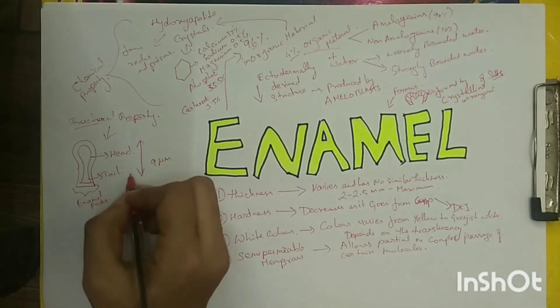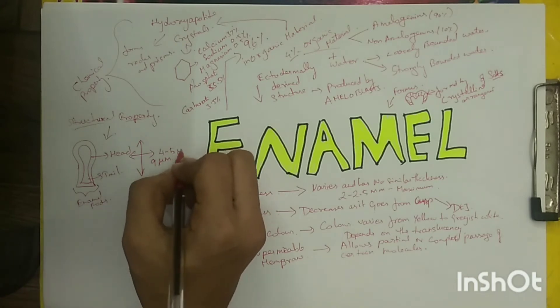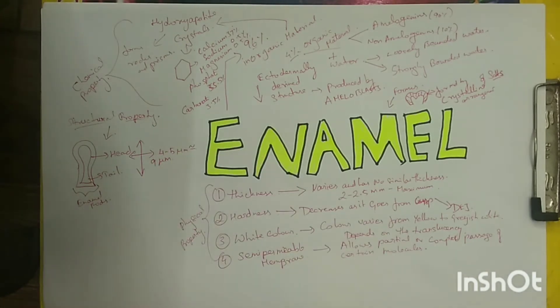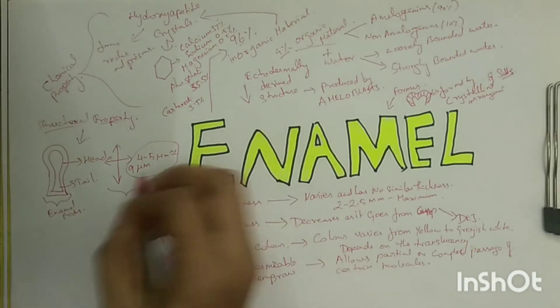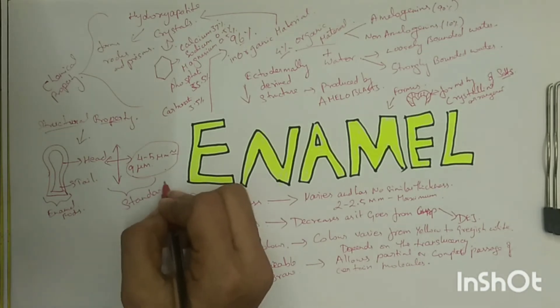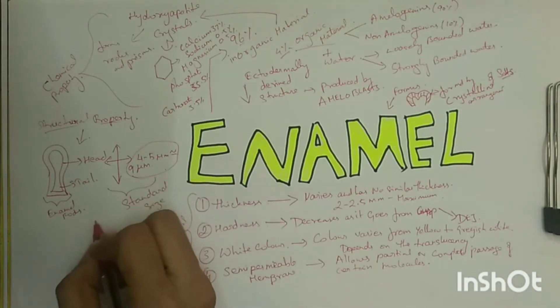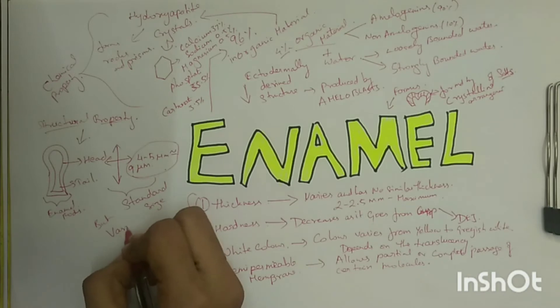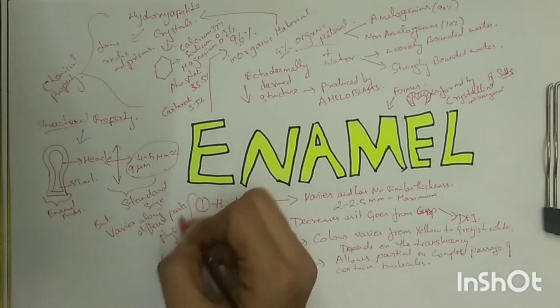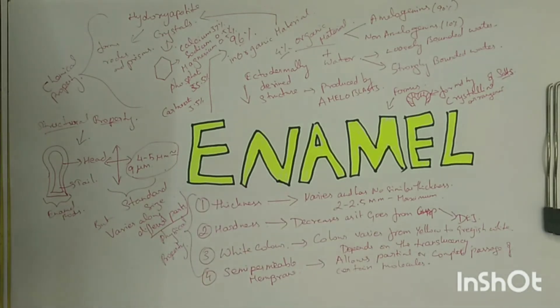Many patterns are observed regarding the arrangement of rods, but usually they arrange with their head portion near the occlusal or incisal surface and their tail portion pointing cervically. The enamel rods have a crystalline structure that allows light to pass through them.